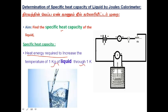For example, if you want to find the specific heat capacity of water, specific heat capacity means increase the temperature by 1 degree of 1 kg liquid.